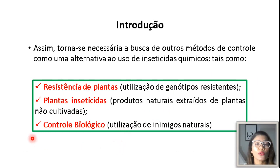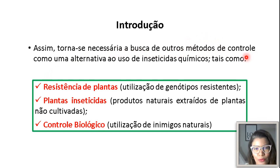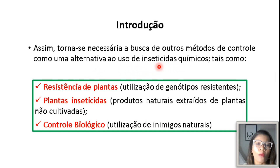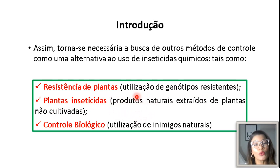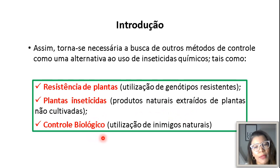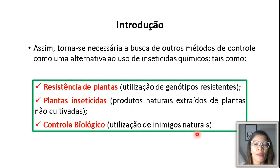Diante de tudo isso, torna-se claro e necessário a busca de outros métodos de controle como alternativa ao uso de inseticidas químicos, tais como a resistência de plantas, que é a utilização de genótipos resistentes; a utilização de plantas inseticidas, que é a utilização de produtos naturais extraídos de plantas não cultivadas; e o controle biológico, que é a utilização de inimigos naturais. Vamos falar um pouquinho sobre cada um desses métodos.